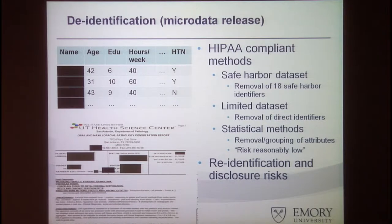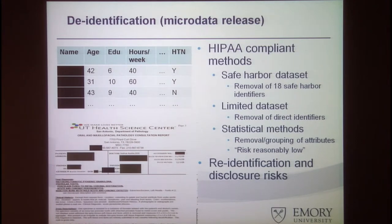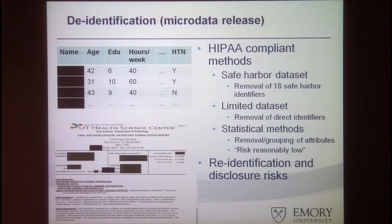As we all know, protecting the privacy of our patients or subjects for disseminated data for secondary use, such as research, is very important. A traditional approach is usually called de-identification or microdata release. Given the original health records, we can sanitize the data by removing the identifiers, such as name and social security number, according to the HIPAA safe harbor methods, or some attributes can be generalized to satisfy the statistical de-identification principles.